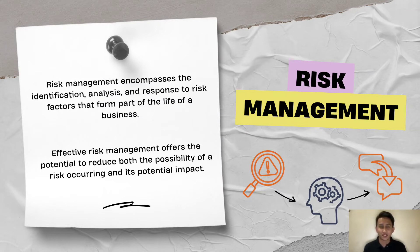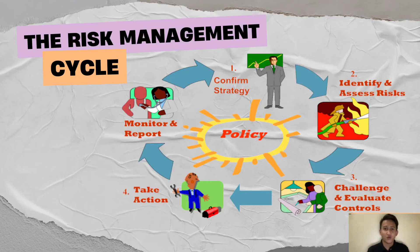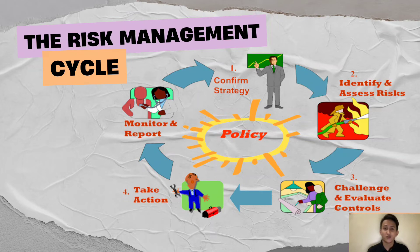Risk management encompasses identifying, analyzing, and responding to risk factors that are part of a business. Effective risk management means attempting to control future outcomes as much as possible by acting proactively rather than reactively. Therefore, effective risk management can reduce the possibility of a risk occurring. Once the risk is identified, we can use the risk management cycle to manage it. The risk management cycle is an essential part of business practice, comprising five steps: confirming strategy, identifying and assessing risk, challenging and evaluating controls, taking action, and monitoring and reporting.